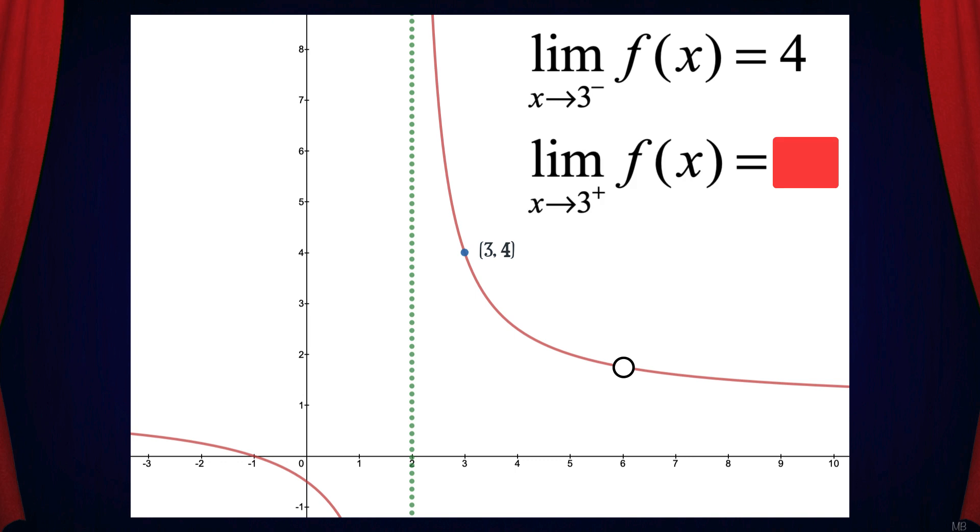What's the limit of f of x as x approaches 3 from the right? Well, it turns out it's also 4. What's the limit of f of x as x approaches 3? Well, since the left and right-hand limits both match, we can say that the limit equals 4.